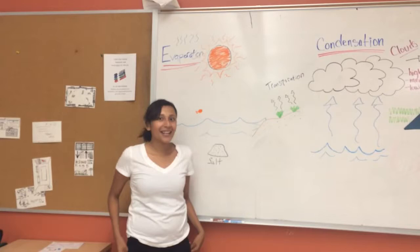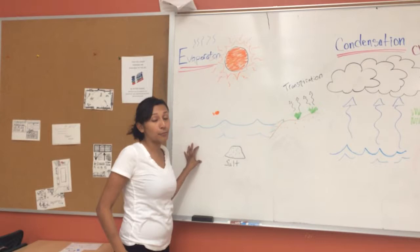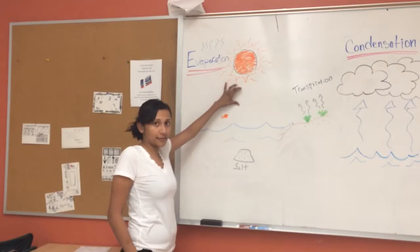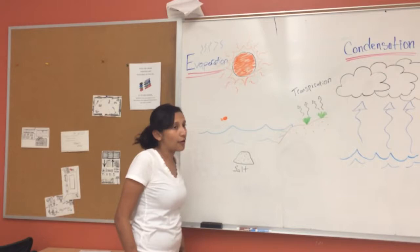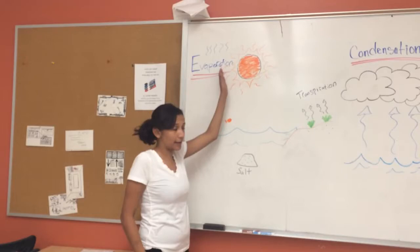The first step is evaporation. This is where the Sun heats up an ocean, a lake, a river — any type of body of water — and it is turned into water vapor. As the water vapor rises, it is purified. In cases of rivers or dried-up puddles, the water is sometimes completely dried up, leaving nothing except the water vapor and the Sun.